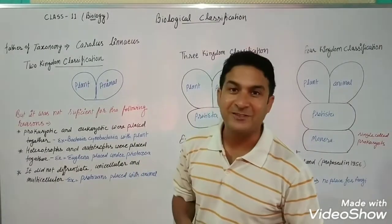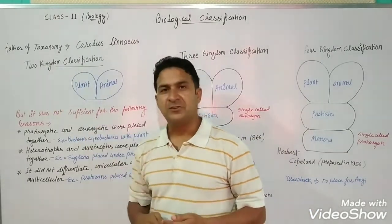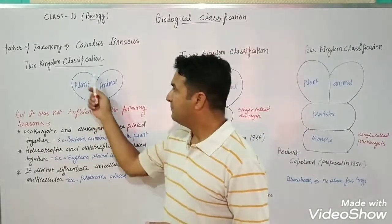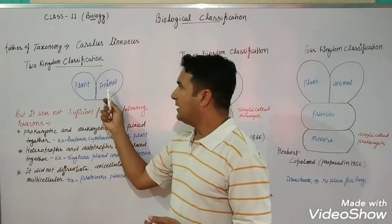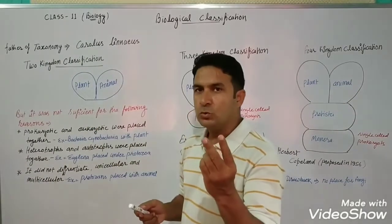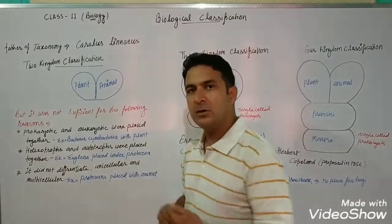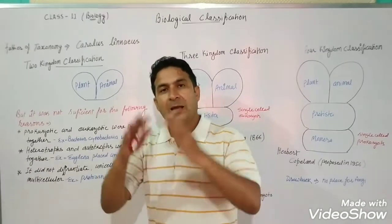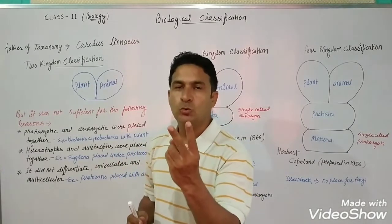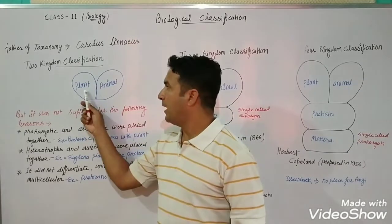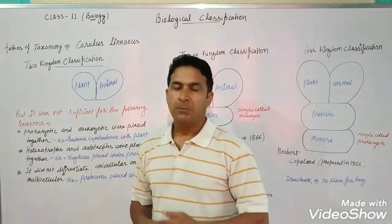Carolus Linnaeus gave the two kingdom classification. This is very important for your competitive exams. As you can see in the pictographic image, there are only two areas of classification: one for plants and one for animals. All organisms were included in only two kingdoms — Kingdom Plantae and Kingdom Animalia.